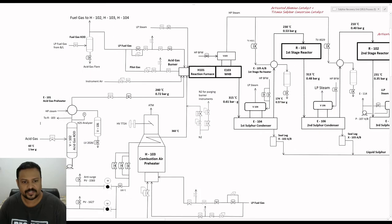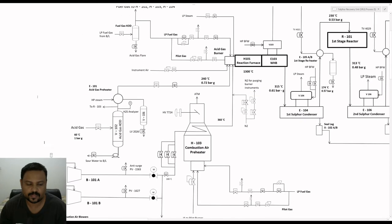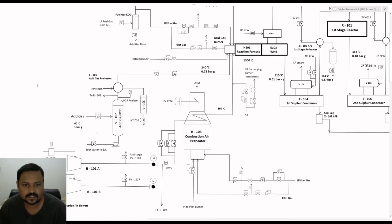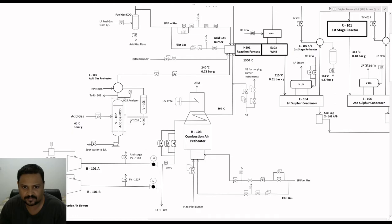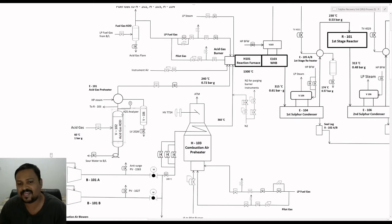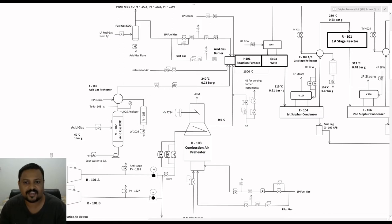Let us jump into the process flow diagram. The acid gas coming from the acid gas recovery unit will first enter the acid gas knockout drum at a pressure of about 1 bar and 60 degrees Celsius. The purpose of the acid gas knockout drum is to prevent any liquid from entraining into the reaction furnace, because the reaction furnace is operating at a high temperature of about 1,300 degrees Celsius. Any liquid entry will result in wide thermal fluctuations and that may damage the refractory inside the furnace, which may also lead to unplanned shutdowns.